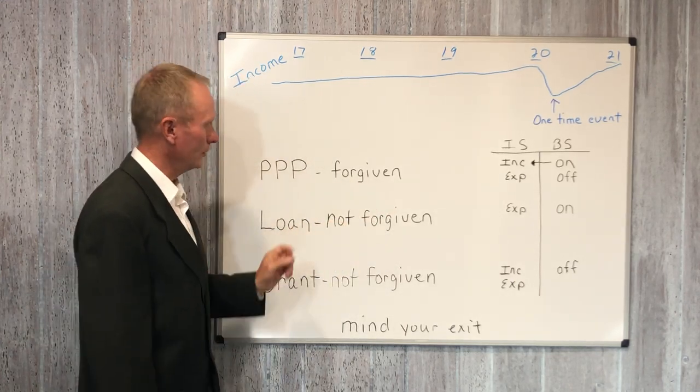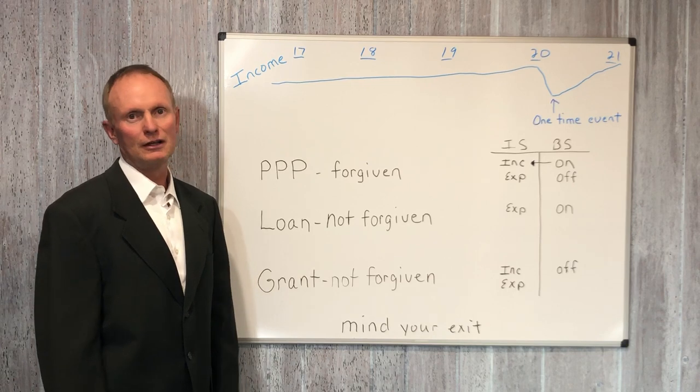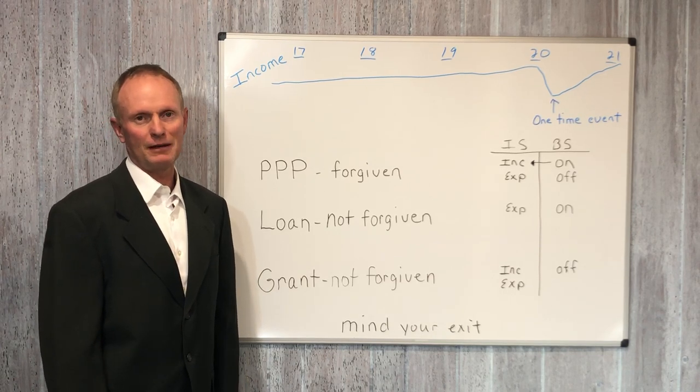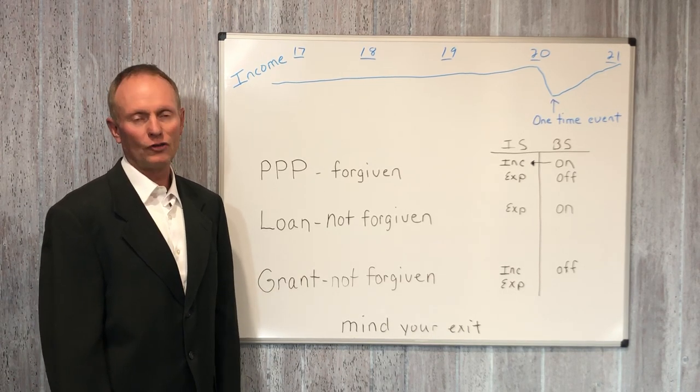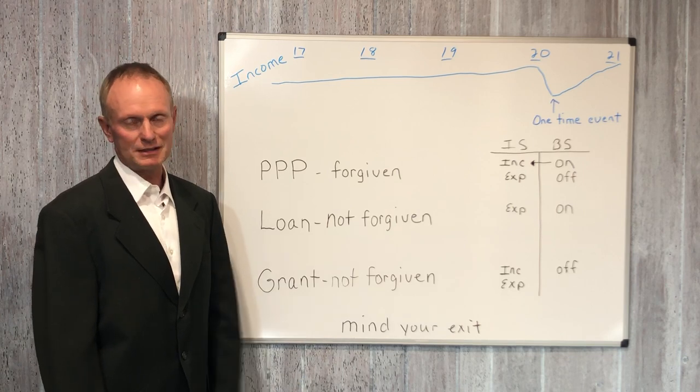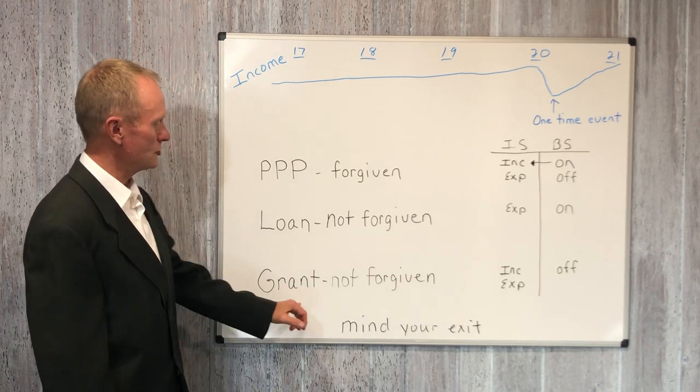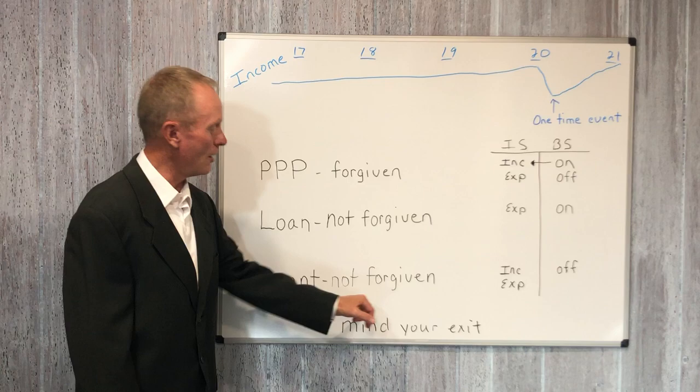The second one is a straight loan, usually a 30-year amortization. First-year interest payments or payments on it are deferred, and it's usually 3.75%. And the third one is just a grant, and it's usually not forgiven.